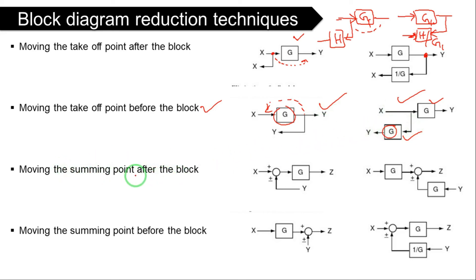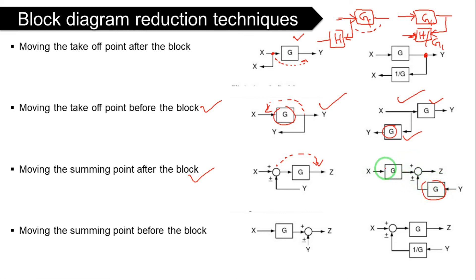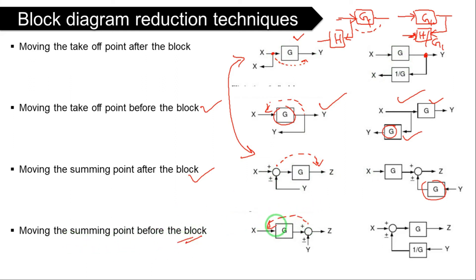Moving a summing point after the block — that is, to the right side: you multiply by the block gain to compensate. Moving the summing point before the block — to the left side: you divide by the block gain. So the rule is: summing point moved right, multiply; summing point moved left, divide. This is the opposite of what applies to takeoff points.